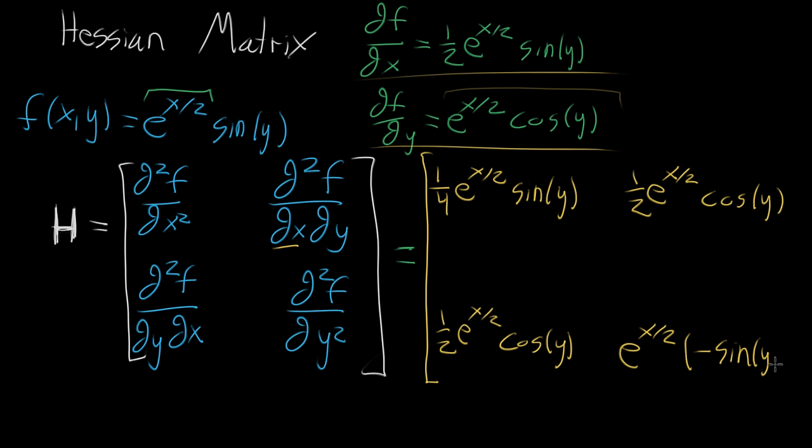So this whole thing — a matrix each of whose components is a multivariable function — is the Hessian. This is the Hessian of f, sometimes written specifying what function it's of. You could think of it as a matrix-valued function: you plug in two different values x and y and you get a matrix.